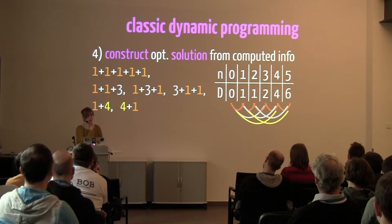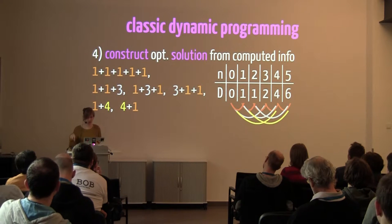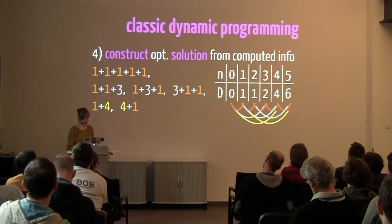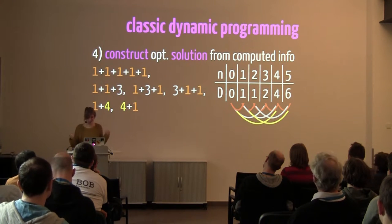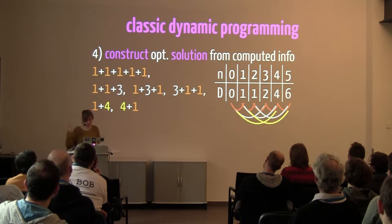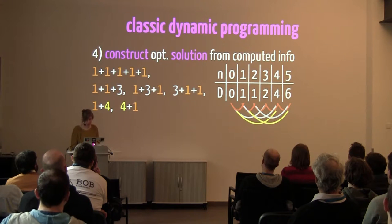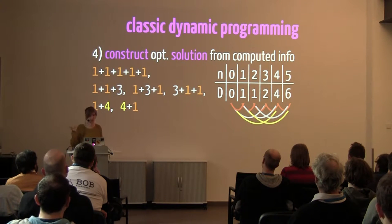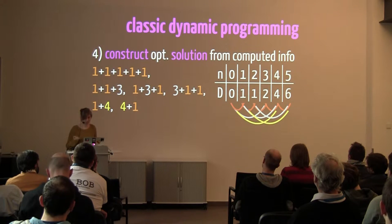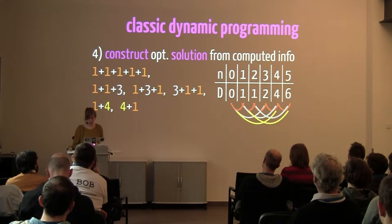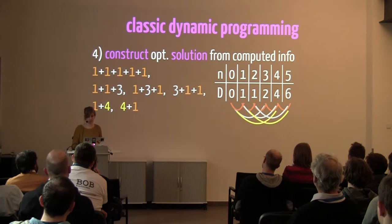The fourth step is usually the complicated one: construct an optimal solution from the computed information. In our case, that means going back from the last position in the table where the six is, and figuring out all the ways the solution was built up. We could also vary the problem and ask for the minimum number of coins to decompose five dollars.